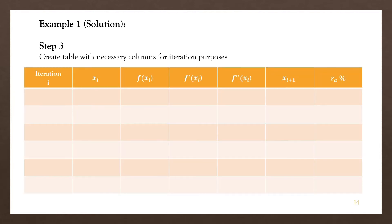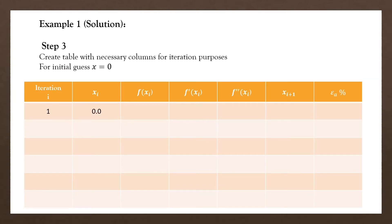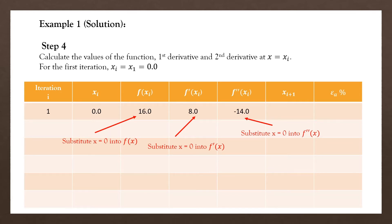Step three: we draw a table with the necessary columns to make the iteration and calculation process easy. Since we are solving for the first initial guess x equal to 0, we write 0 in the xi column for the first iteration, then substitute x equal to 0 into f(x), f'(x), and f''(x) to get 16, 8, and minus 14 respectively.